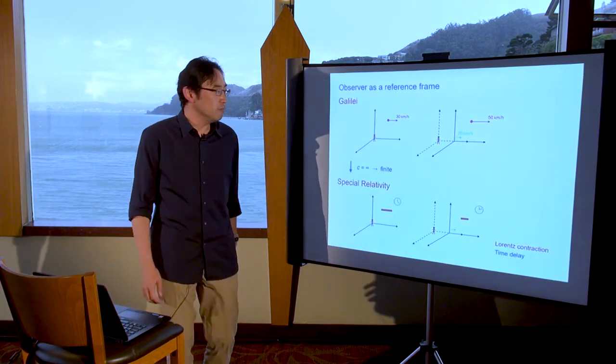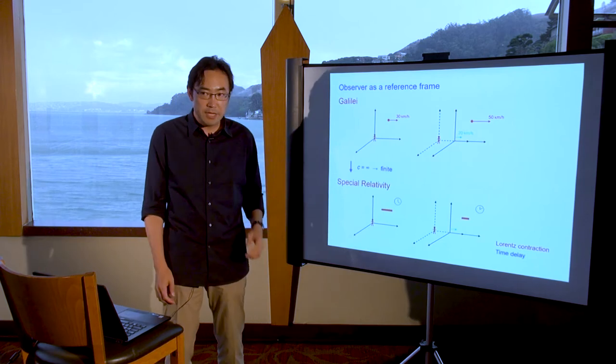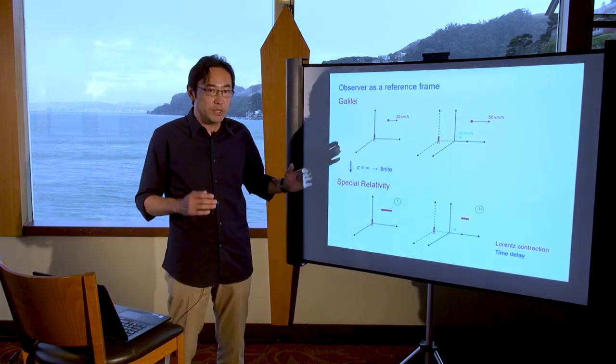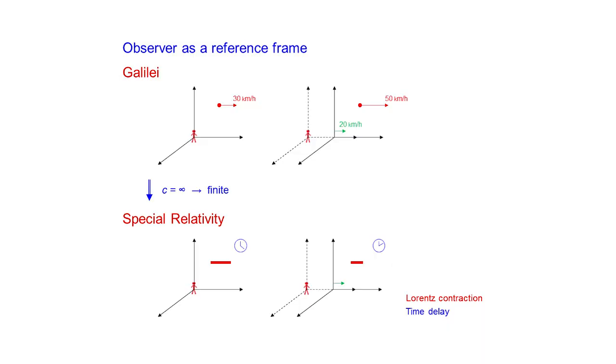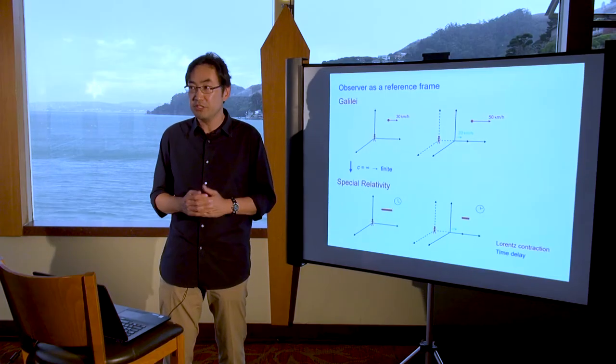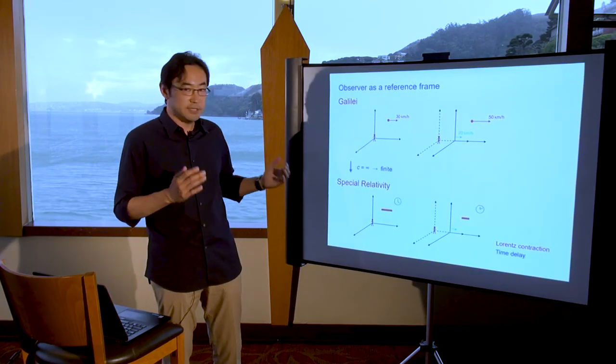So first, observer as a reference frame. Even in Galileo's time, in the old days, we knew that the description of the same physics differs if you change the reference frame. Suppose you talk about an object moving at 30 km per hour, but you're describing the same object from a frame moving at 20 km per hour compared with the original frame, then that object looks like it's moving at 50 km per hour. The velocity of that object changed, but the truth is single.